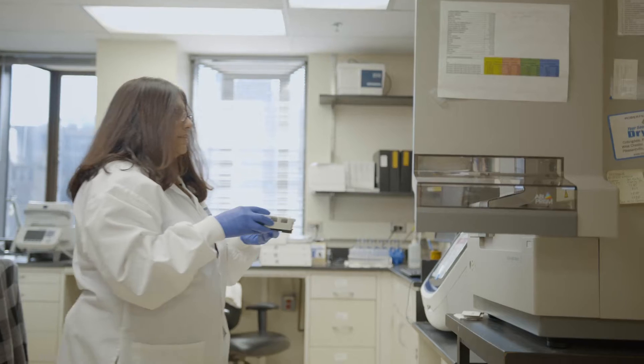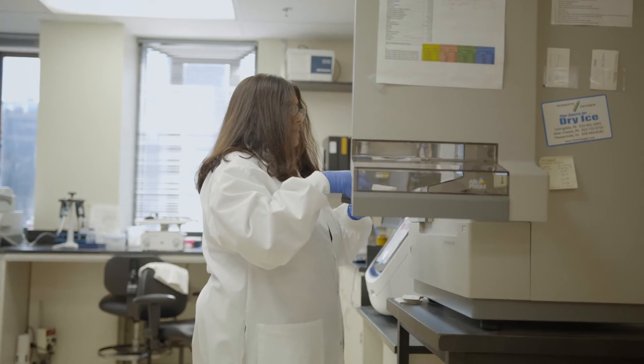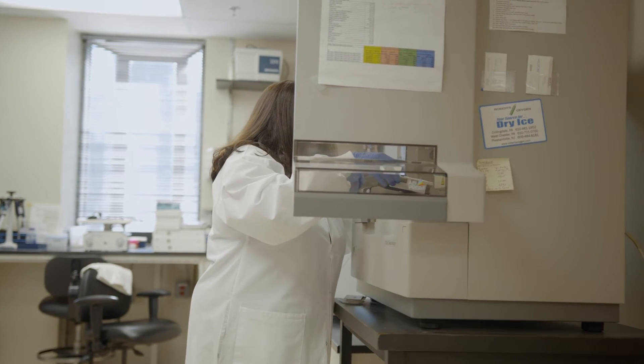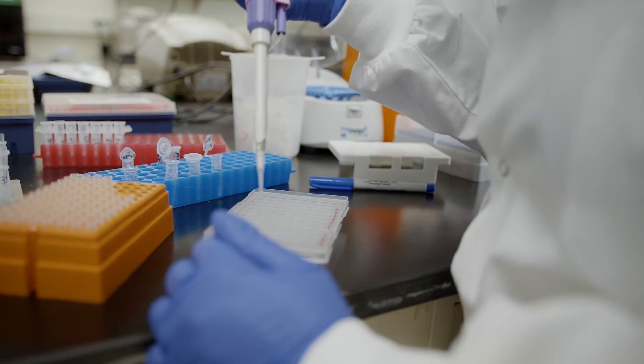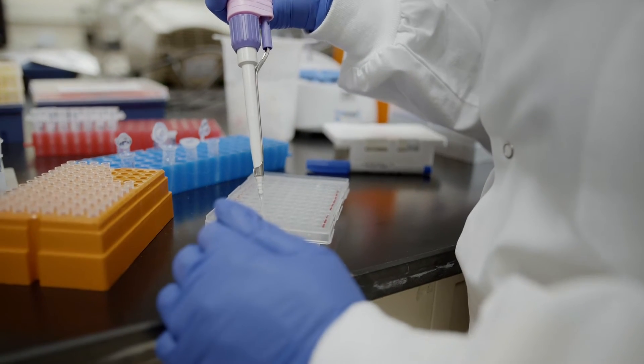So a scientist may be interested in a particular gene, and they may have isolated that gene and just wanted to check the sequence of that gene to see if there are any mutations or anything else. So they would then clone it into a vector, give it to us, and we would get the sequence of that gene using this machine.